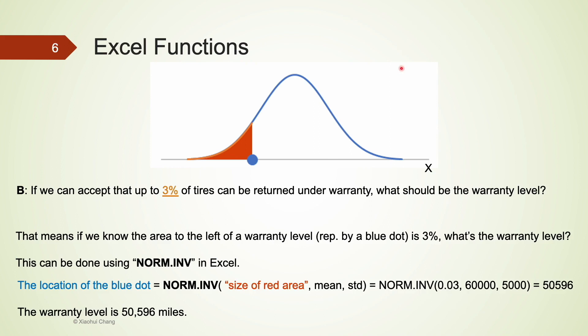Part B is the opposite — we have the area to the left of the blue dot, which is 3 percent, and we want to find the blue dot's value. We use NORM.INV, which takes three arguments: the area to the left (3 percent), the mean, and the standard deviation. Excel gives us 50,596 miles as the warranty level.